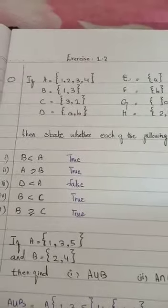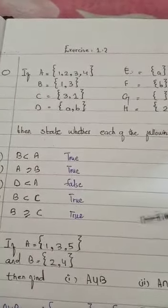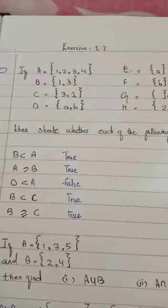So here A is the subset of B, it is also true. B is the subset of A, so here both elements are different, so here you have to write false. Then B is the subset of C, so here you have to write true.